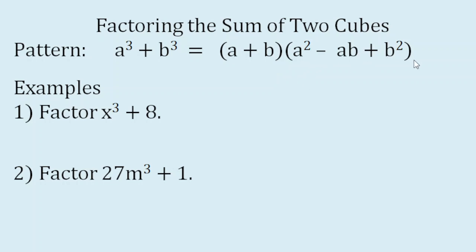To factor the sum of two cubes, it is advised that we find first the binomial factor. We will get the cube root of A cube, which is A, then the cube root of B cube, which is B.